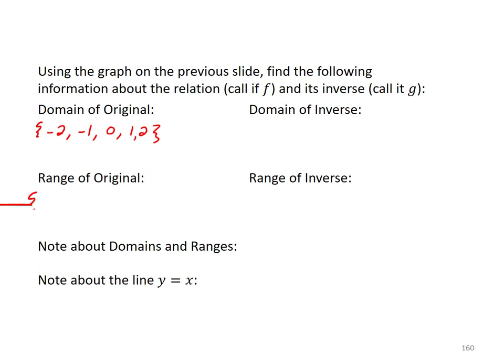And the range of the original, that's our set of y values. So that is the set 5, 2, 1. And 2 and 5 are already included, so I'm not going to repeat those. The domain of the inverse was 5, 2, 1, again that's the set containing 5, 2, and 1.